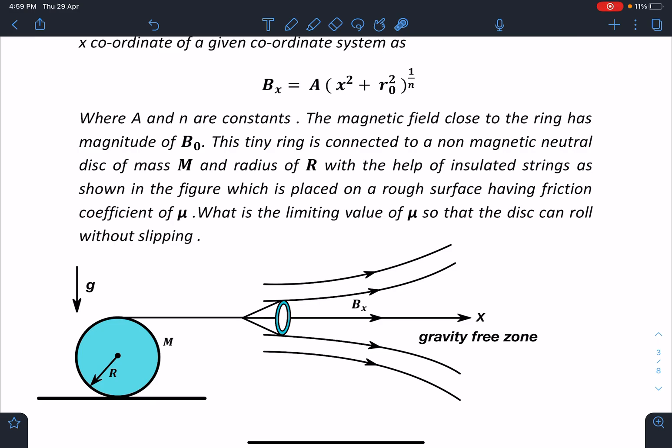The magnetic field close to the ring has magnitude of B₀. This tiny ring is connected to a non-magnetic neutral disk of mass M and radius of R with the help of insulated strings as shown in the figure, which is placed on a rough surface having friction coefficient of μ. What is the limiting value of μ so that the disc can roll without slipping? Here I'm assuming mass of ring is negligible, otherwise this problem will be slightly tricky.